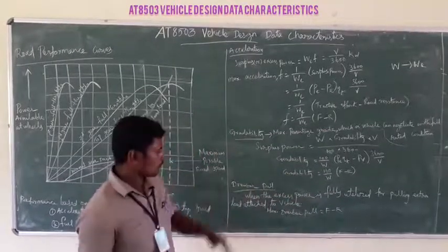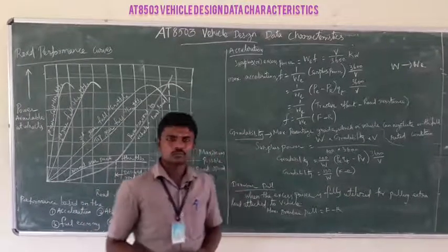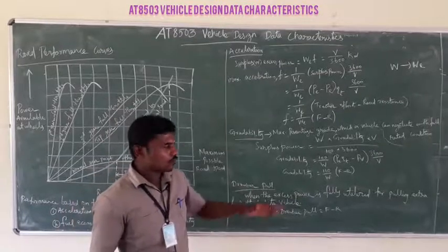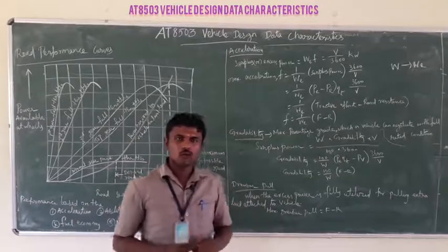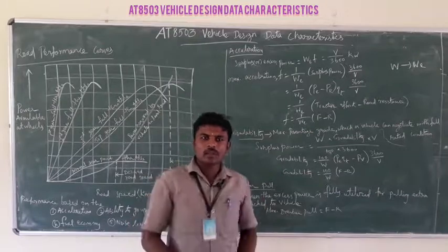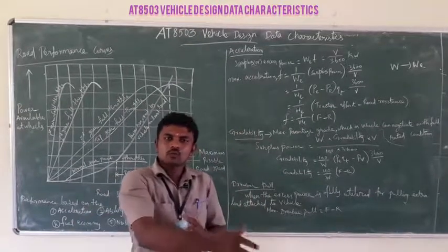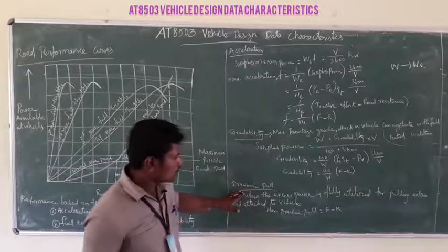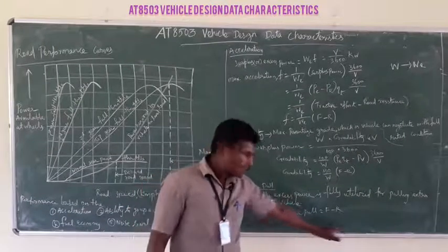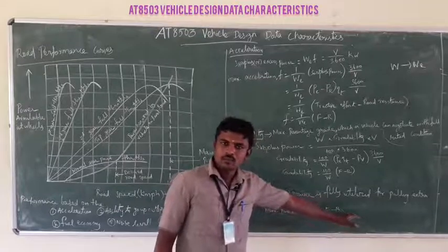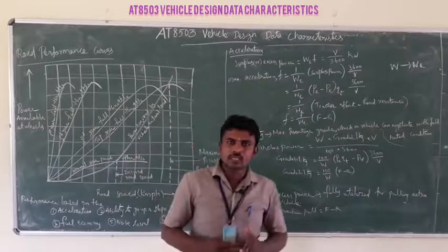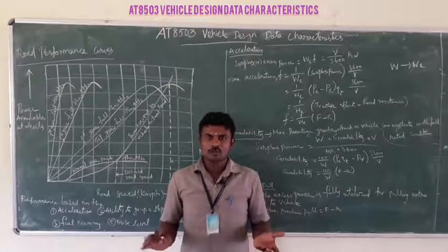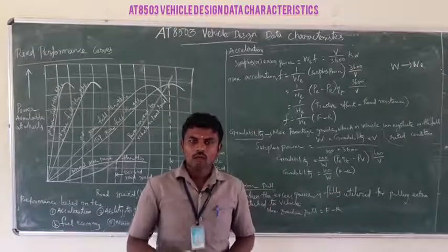W is the weight of the vehicle. Finally, drawbar pull: when the excessive power is fully utilized for pulling an extra load attached to the vehicle, we give extra power to move that load. That is the drawbar pull. The formula is: Drawbar pull = F − R, where F is tractive effort and R is resistance. This is a major thing to consider while designing automobile vehicles. In the next lesson I will teach you about another important topic. Thank you.